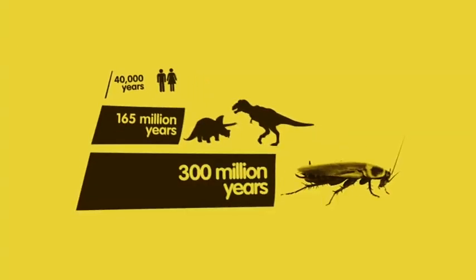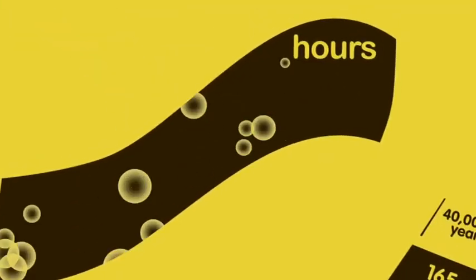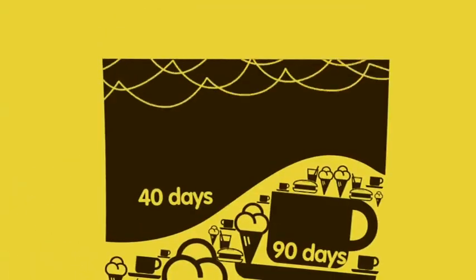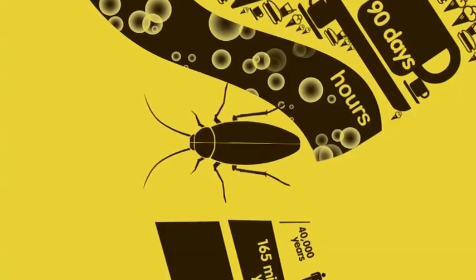Now consider the humble roach, survivor of ice ages, continent breakups and asteroid impacts. A survivor which can go for hours without oxygen, for 90 days without food and 40 days without water. A survivor which can even regrow severed limbs.